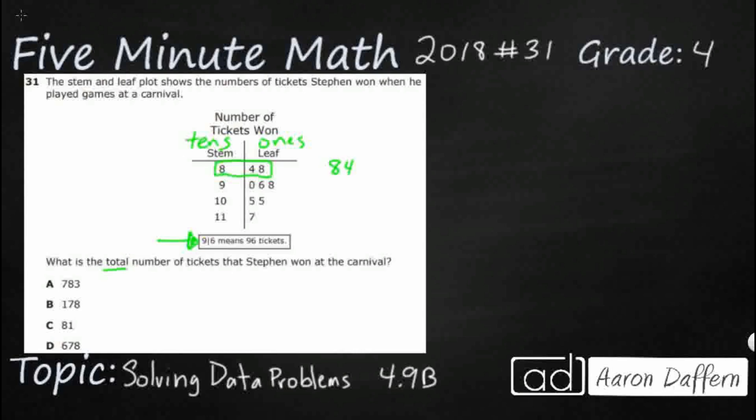So the 8 goes with that first leaf of 4, so I'm gonna get 84. Now it's not 848. Each of these leaves actually goes separately with the stem. So when we're trying to figure out what that 8 represents, we actually have to go back to the stem of 8 and then we pick up the leaf of 8. So this row right here actually represents two quantities because there's two leaves: 84 and 88.